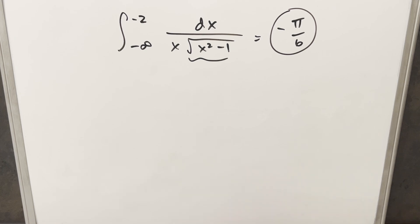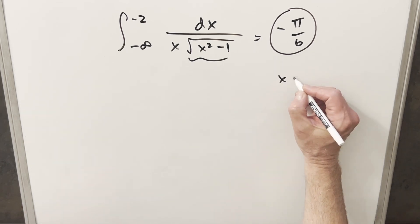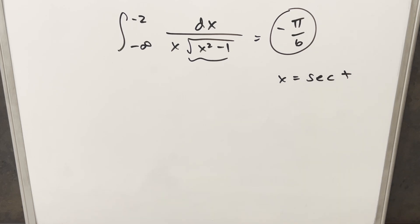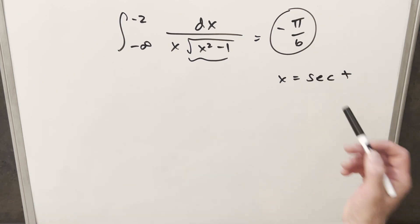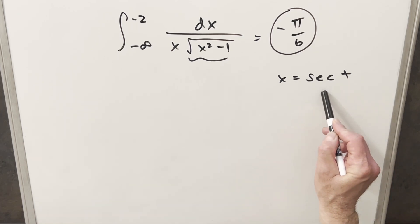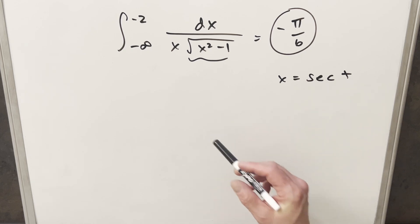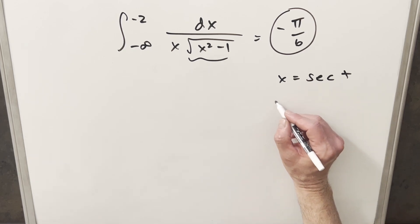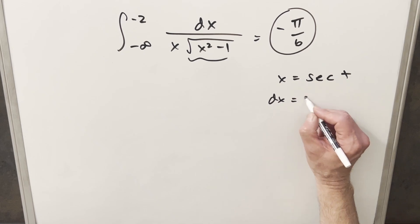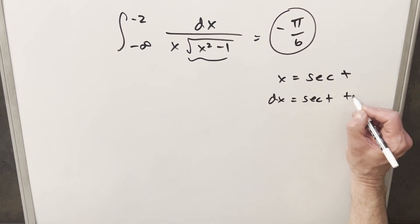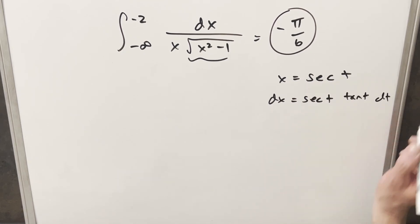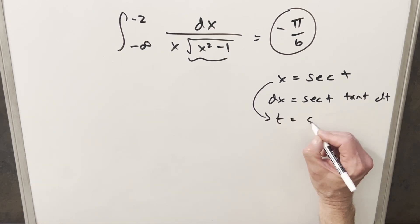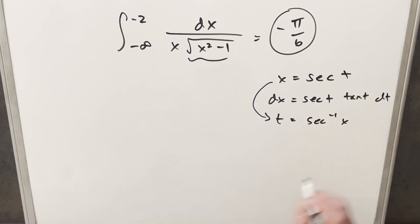Now for my second method we'll do the trig substitution, letting x equal secant of t. As discussed in previous videos, secant is not one-to-one — it's not injective, not invertible — but we can restrict our domain to make this work. Taking the derivative: dx equals secant(t) tan(t) dt. Inverting, we write t equals inverse secant of x.